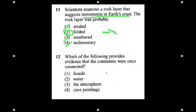Number 12: which of the following provides evidence that the continents were once connected? Fossils — definitely. Water? No. Atmosphere? That moves around all the time. Cave paintings? We weren't around when the Earth had Pangea. So the answer is fossils.